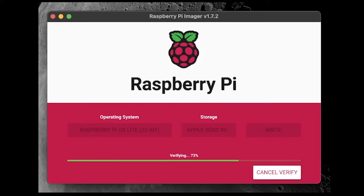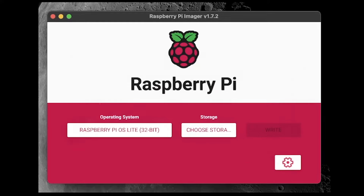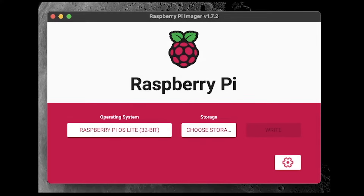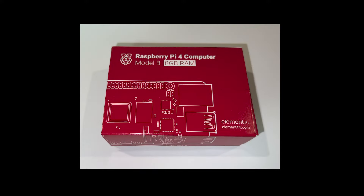Once done, close the app and remove the card from the computer. Let's put this card aside for a bit while I take you through building a Raspberry Pi 4 for those of you that are new to this. Depending on what you purchased, your packaging may vary — maybe you bought individual parts or a kit. Either way, it should look very similar. This is a boxed Pi 4B with 8GB of RAM.